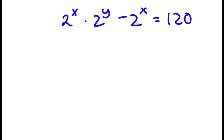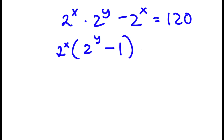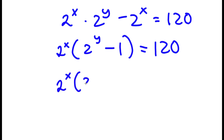I'm going to factor out 2 to the power of x from the left-hand side. So I have 2 to the power of x times the quantity 2 to the power of y minus 1 is equal to 120. And 120 is the same thing as 8 times 15.